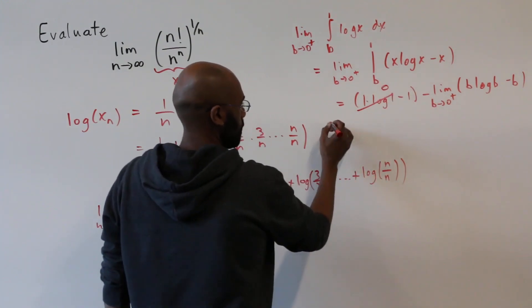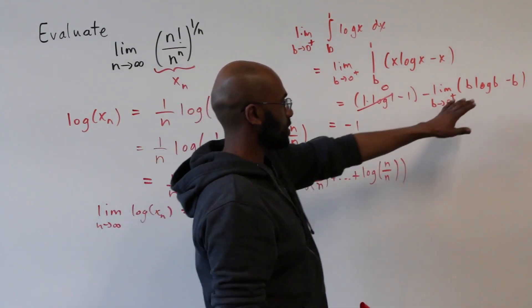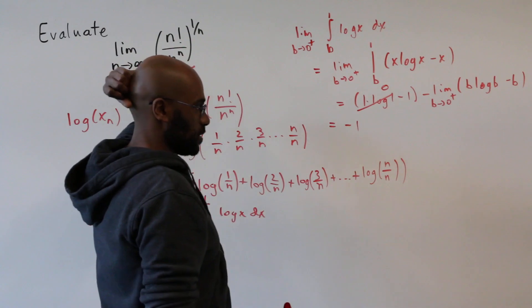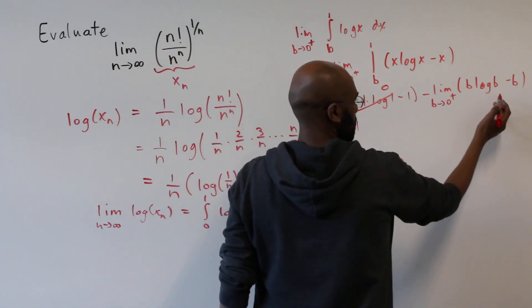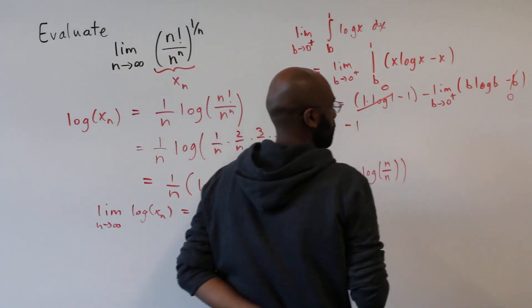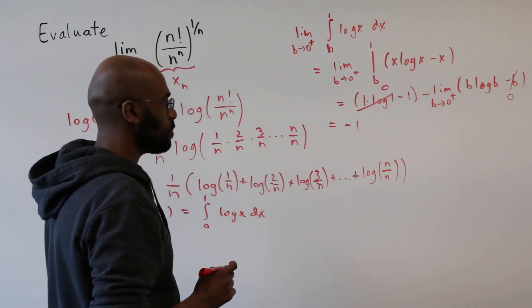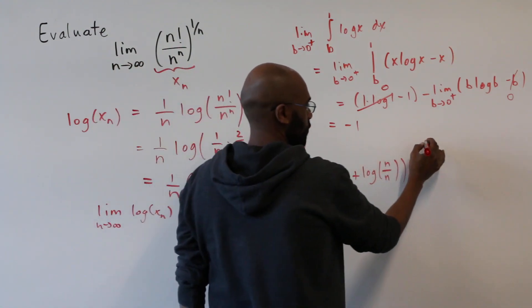Okay, this is 0. So we get negative 1 times this limit. Let's analyze some pieces of this. So as b goes to 0, this quantity here goes to 0. Now the question is, what happens to b log b? We'll take a little separate step over here.